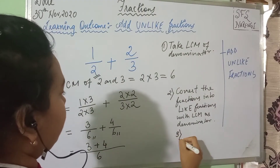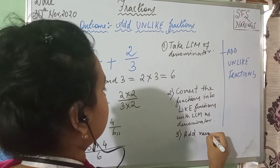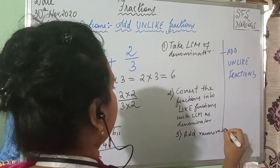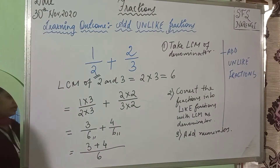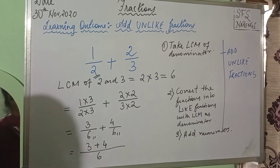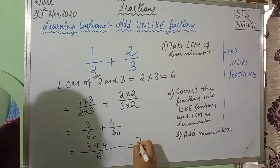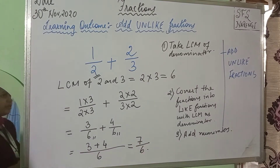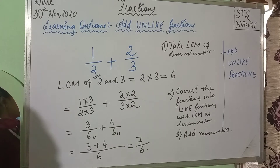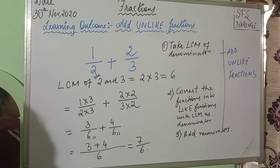The third step is to add the numerators. Once you add the numerators, what do you get? 4 plus 3 is 7. So the result is 7 by 6. When you add these unlike fractions, you will get 7 by 6.